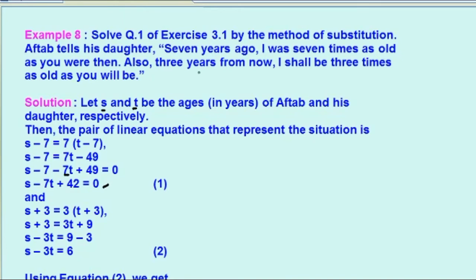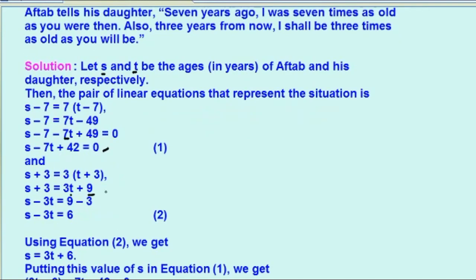और next condition है: also three years from now, यानि कि S plus 3. I shall be three times as old as you will be, यानि कि S plus 3 equals to 3(T plus 3). तो 3 into T plus 3 equals to 3T plus 9. इन दोनों को solve करने पर S minus 3T equals to 9 minus 3, यानि कि S minus 3T is equal to 6. यह हमारा हो गया equation 2.